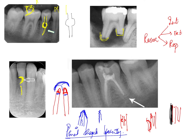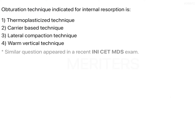The most common cause for resorption is pulpitis, so root canal therapy remains the mainstay treatment. Replacement resorption most commonly occurs in cases of avulsion or replantation. To help prevent it, you can place the tooth in sodium fluoride — it doesn't guarantee no replacement resorption but it delays the process. Root canal therapy is the mainstay treatment for resorption overall.